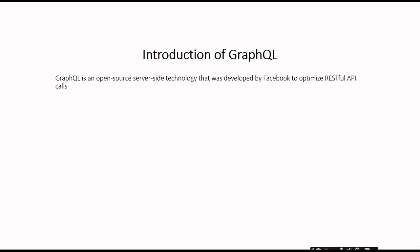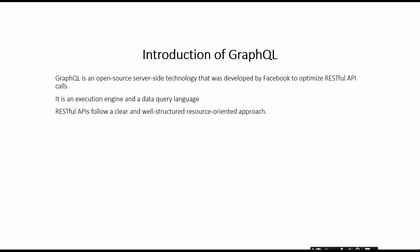Before moving to how we use Postman to validate the GraphQL responses, let's first understand what is GraphQL. GraphQL is an open-source server-side technology that was developed by Facebook to optimize RESTful API calls. It is an execution engine and data query language — we pass some queries and based on those queries it will execute and get the response. RESTful APIs follow a clear and well-structured resources-oriented approach.